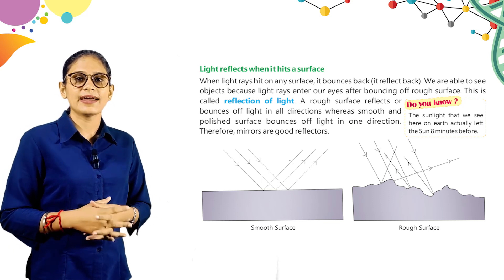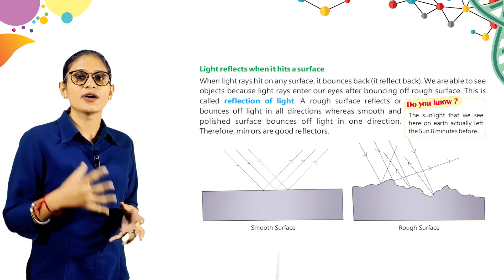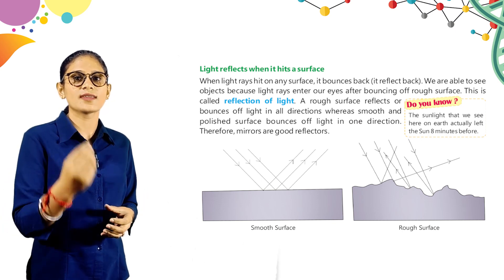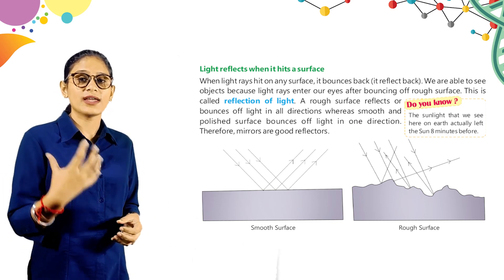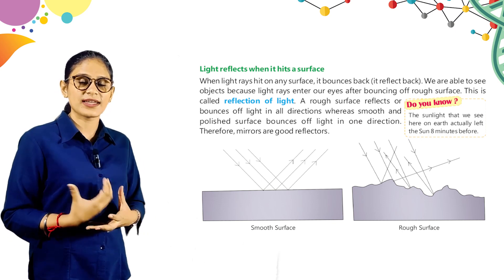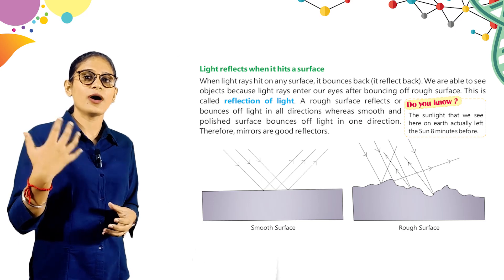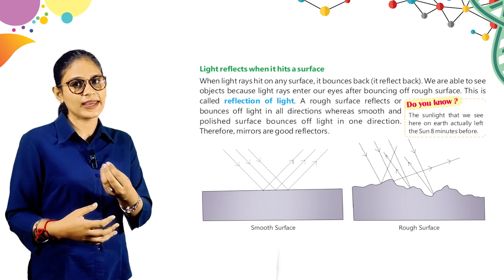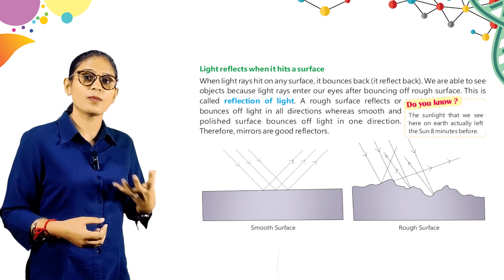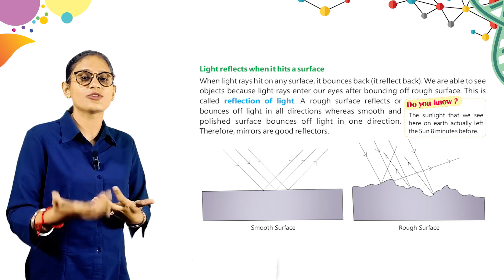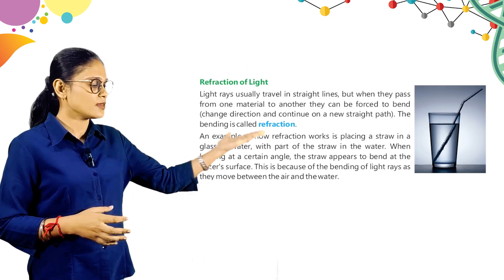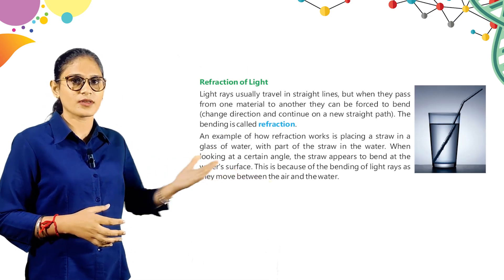Do you know? The sunlight that we see here on Earth actually left the sun 8 minutes before. The sunlight we see on Earth has already been travelling for 8 minutes from the sun. Look at this picture — smooth surface and rough surface.